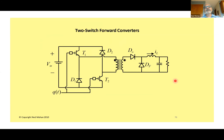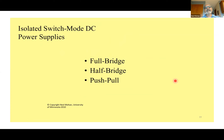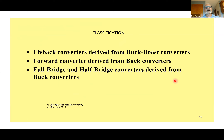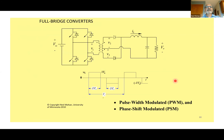We then cover two-switch forward converters, full bridge, half bridge, and push-pull. Flyback is derived from buck-boost, forward from buck, and full bridge and half bridge are derived from buck. Full bridge can be controlled using PWM or phase-shift modulation, which is good to know before going into soft switching.